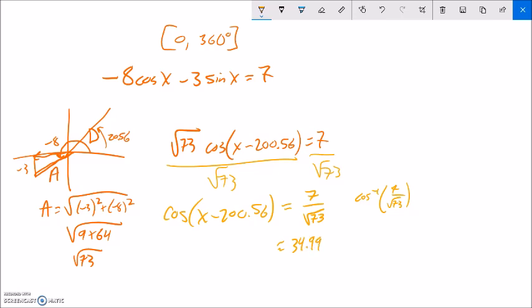Now the other thing I want to point out here is when I went inverse cosine, it gave me this angle, right? And cosine is about width. There's another angle that has that same width. So I also have to go 360 minus this to get to my next piece, my other angle. And I got 325.01, about.